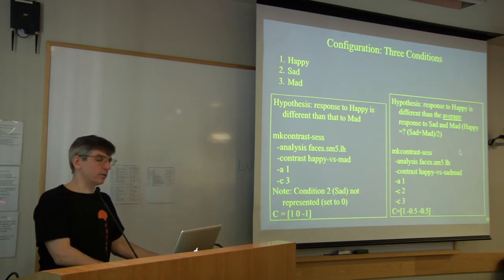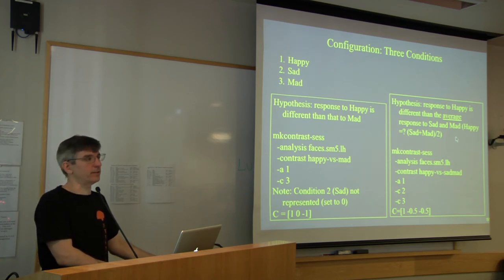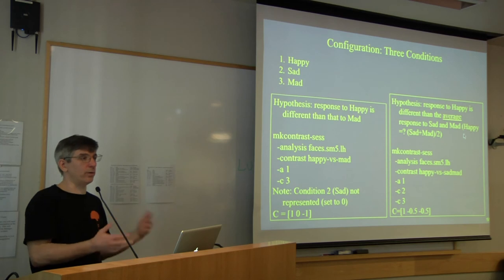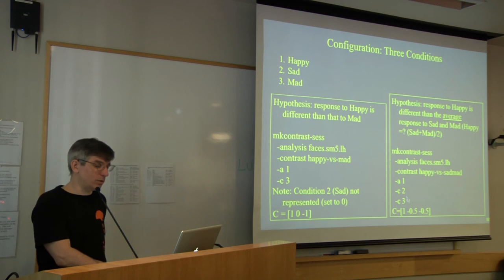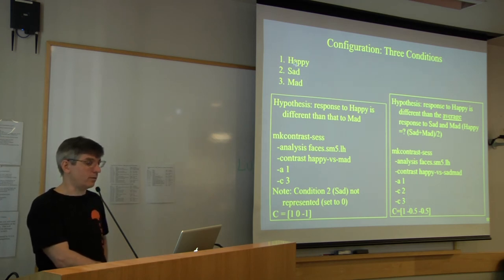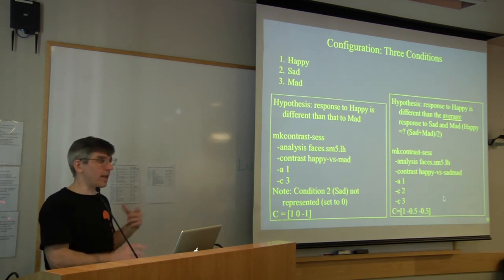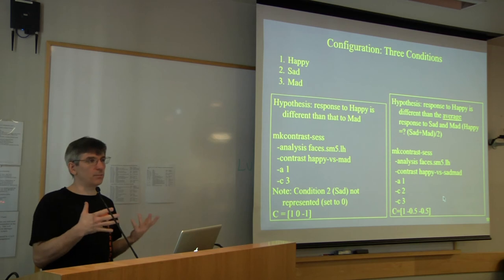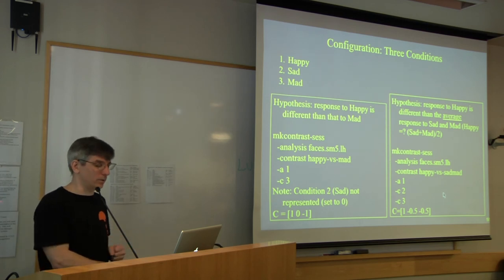If I wanted to test whether response to the odd block was significantly different from fixation (deviation from baseline), I give A1 (task odd, code 1) versus zero (fixation). Contrast matrix becomes [1, 0] — one for task odd, zero for task even (effectively treating task even as a nuisance variable for this contrast).